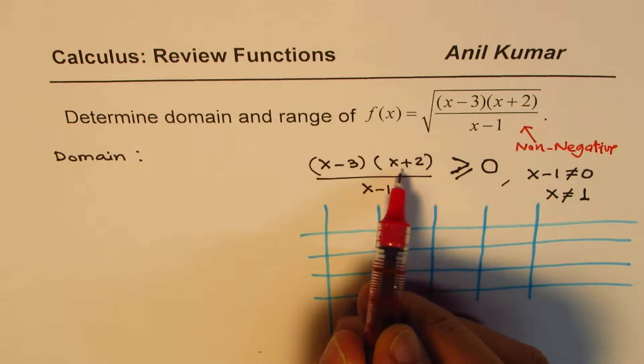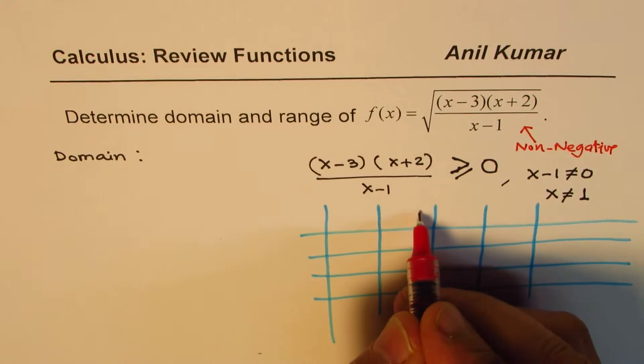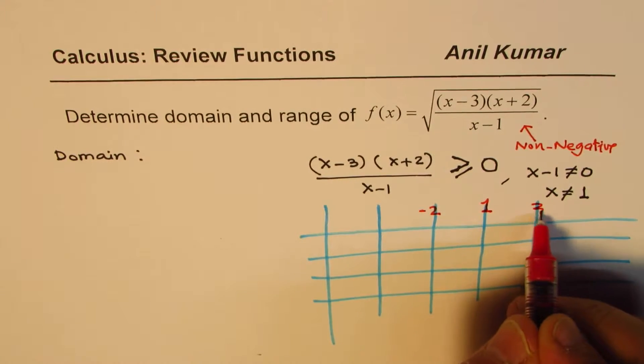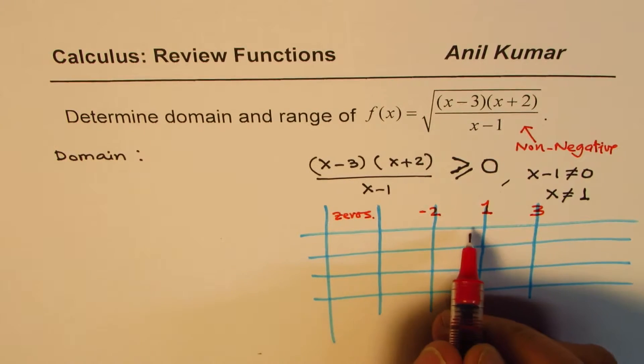So what we have here is that we have a 0 at minus 2. x plus 2 will be 0 at minus 2. And then x minus 1 will be 0 at 1, and x minus 3 will be 0 at 3. So these are x values where we have zeros. So let me write zeros here. Now these zeros divide our plane in four intervals. So we will analyze each and every interval. So this interval is from minus infinity to minus 2. The other one is from minus 2 to 1, then 1 to 3, and 3 to infinity.